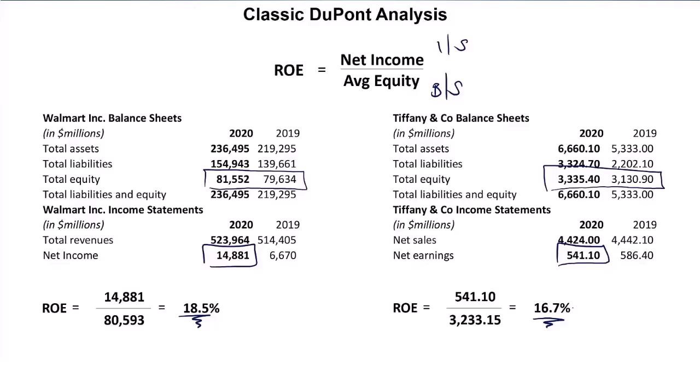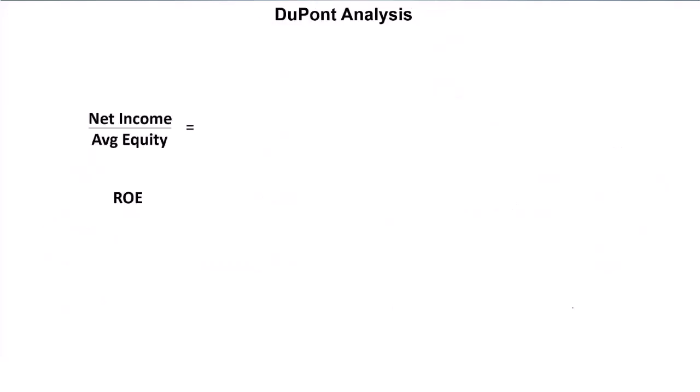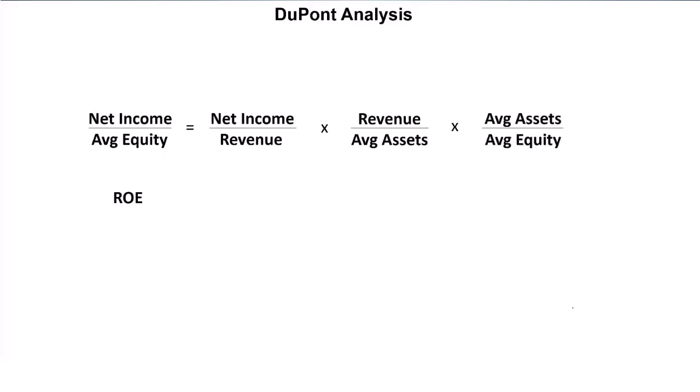But we're here today to go even further than that. We're now going to break down those ROEs and see what generates the return, using DuPont analysis. We're going to break it down into three ratios: first, net income over revenue; multiply that by revenue over average assets; and multiply that by average assets over average equity.